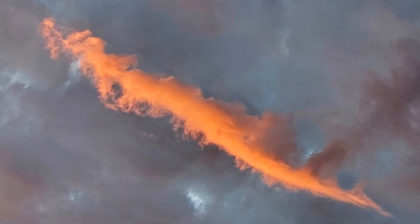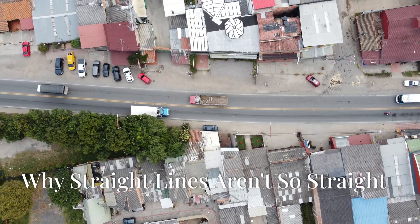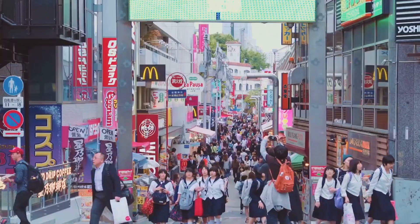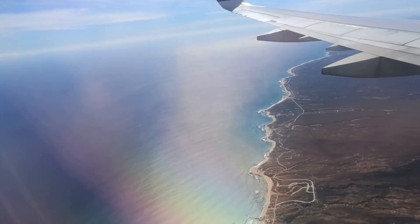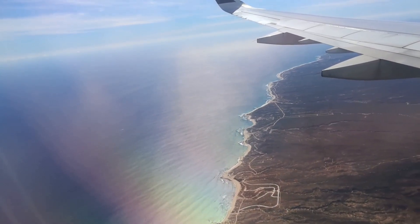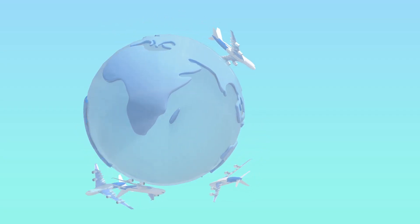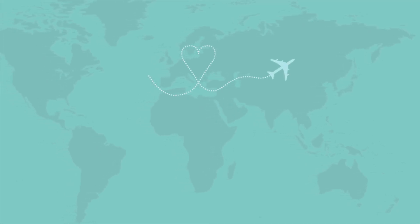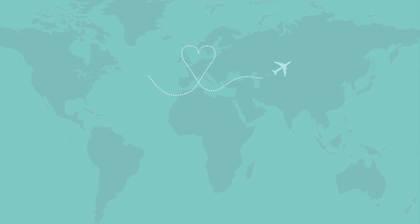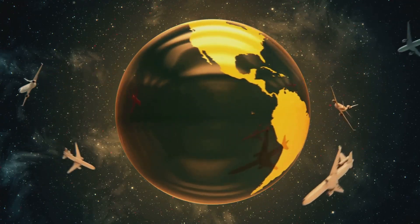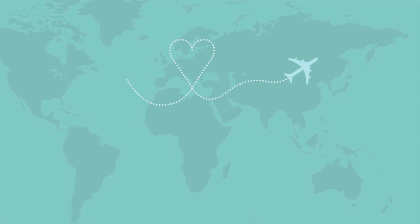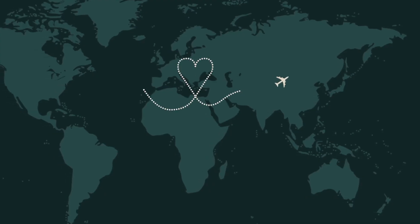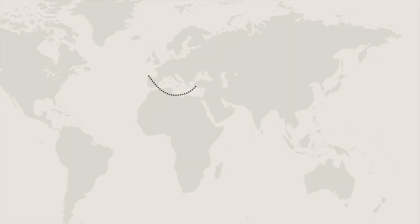We are naturally accustomed to thinking in two dimensions — it's how we experience the world on a daily basis. But when it comes to long distances, the Earth's curvature becomes impossible to ignore. This is where the concept of the great circle route comes into play. Imagine slicing through the Earth with a plane that passes through both your starting point and your destination. This plane intersects the Earth's surface in a circle, and the shortest path between your two points lies along the arc of that circle. This is the essence of a great circle route — it represents the shortest distance between two points on a sphere.